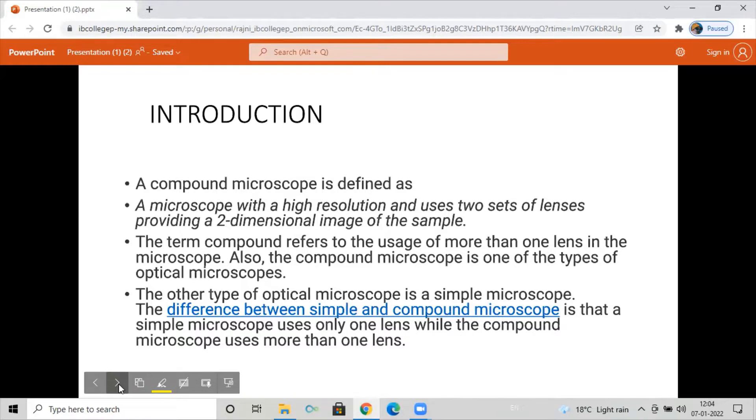The term compound refers to the usage of more than one lens in the microscope. Also, the compound microscope is one of the types of optical microscopes. The other type of optical microscope is a simple microscope. The difference between simple and compound microscope is that a simple microscope uses only one lens while the compound microscope uses more than one lens.